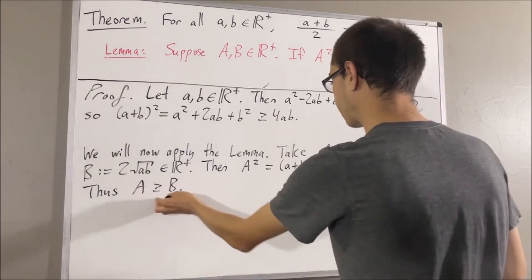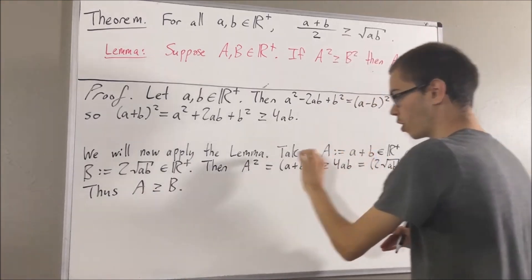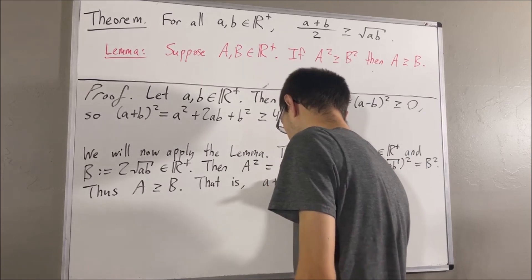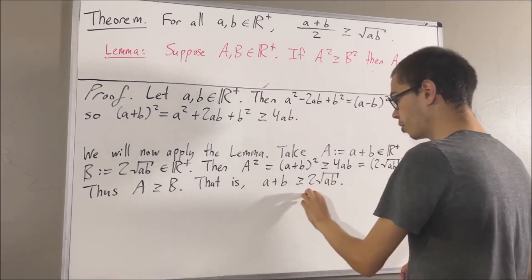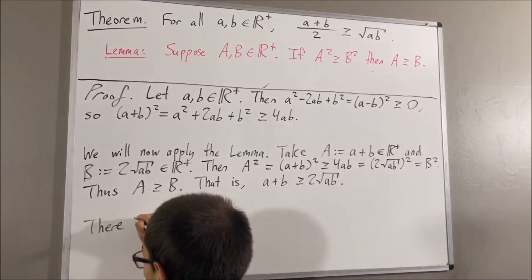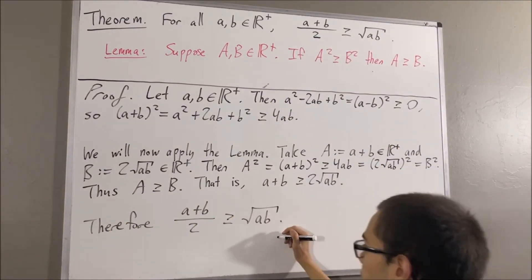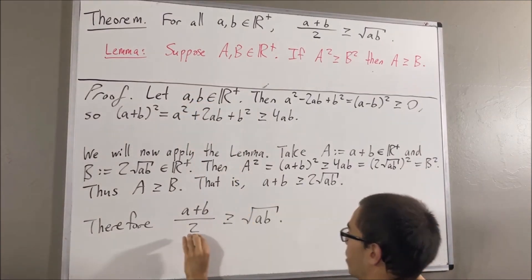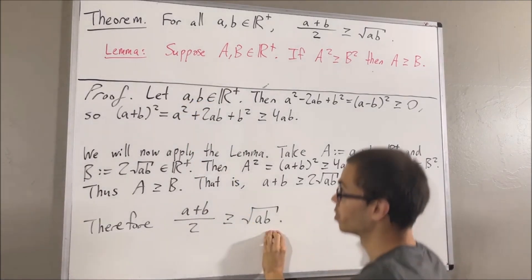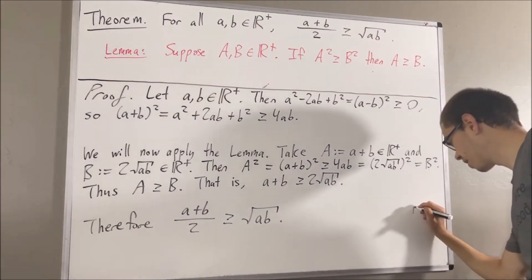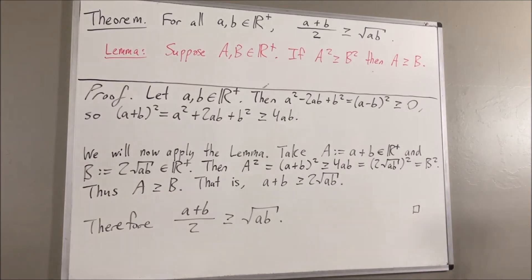This means that a plus b is greater than or equal to 2 times the square root of ab. Dividing both sides by 2, we get precisely this inequality. So, given any two positive real numbers a and b, this inequality is true. We have proven precisely the theorem. This completes the proof. That's pretty much it for this video.